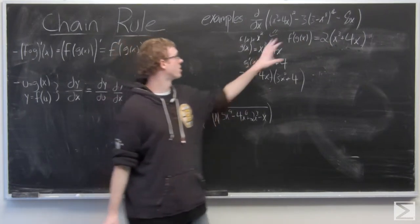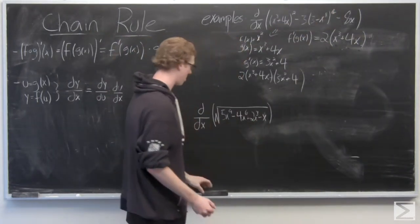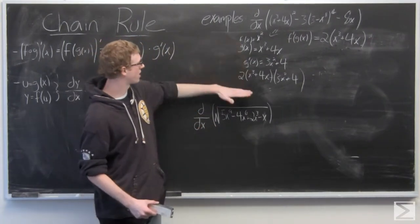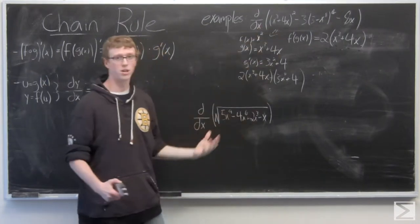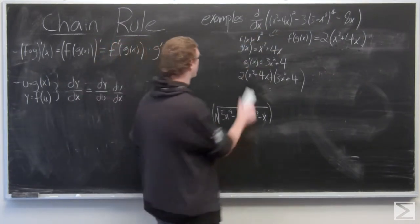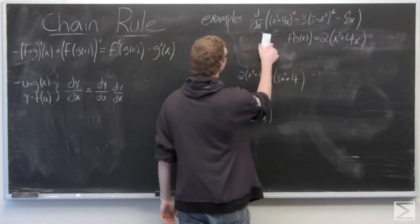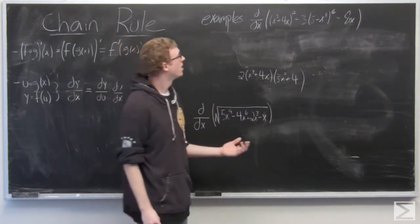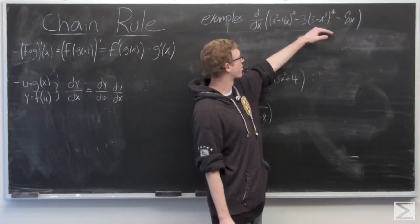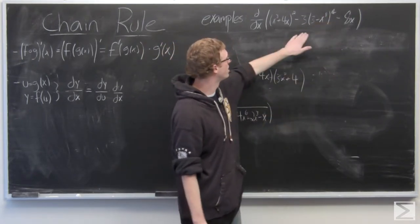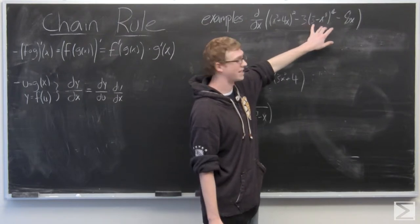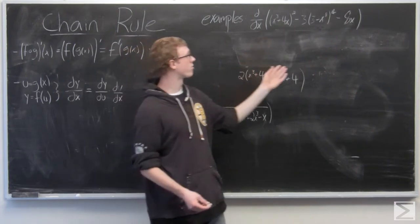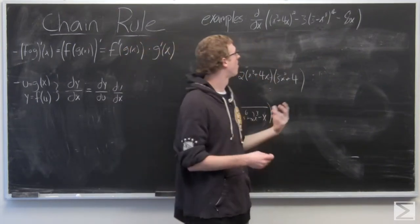Using linearity, we're going to handle each of these terms separately. This is the derivative of the first term, and we're going to follow the same process for the second term. For the second term, f of x is negative 3x to the fourth, g of x is 3 minus x to the eighth, and f of g of x would be negative 3 times 3 minus x to the eighth to the fourth.